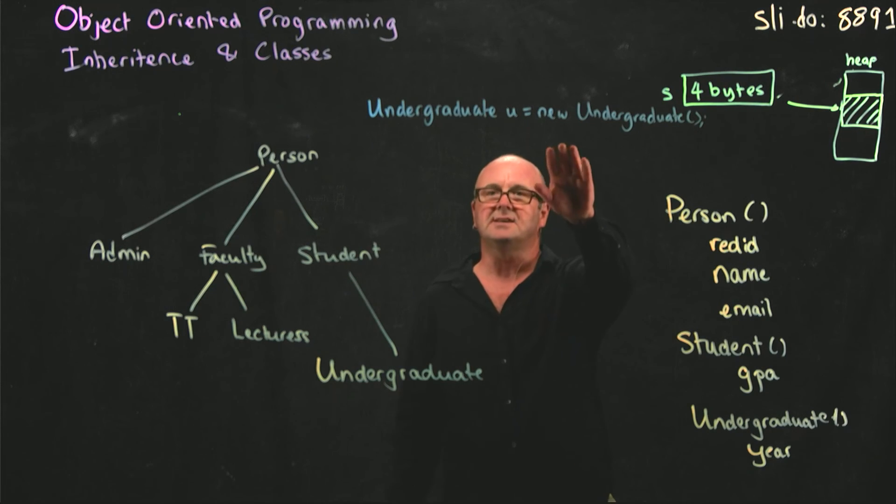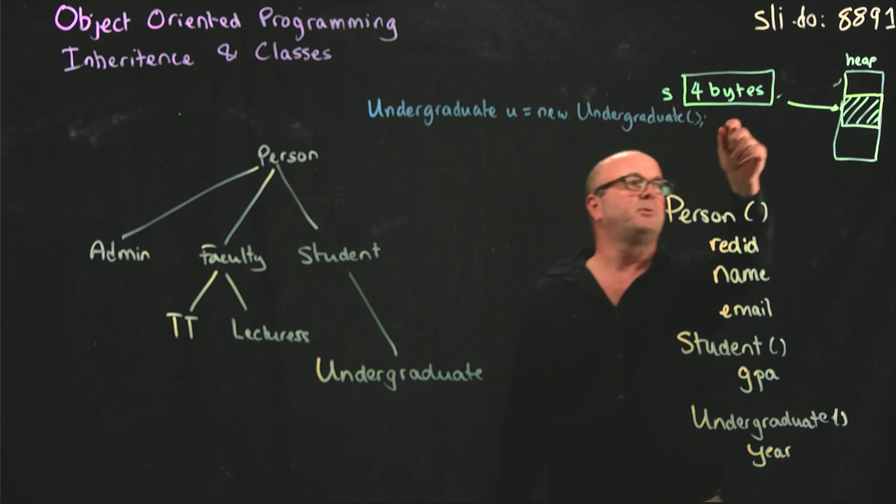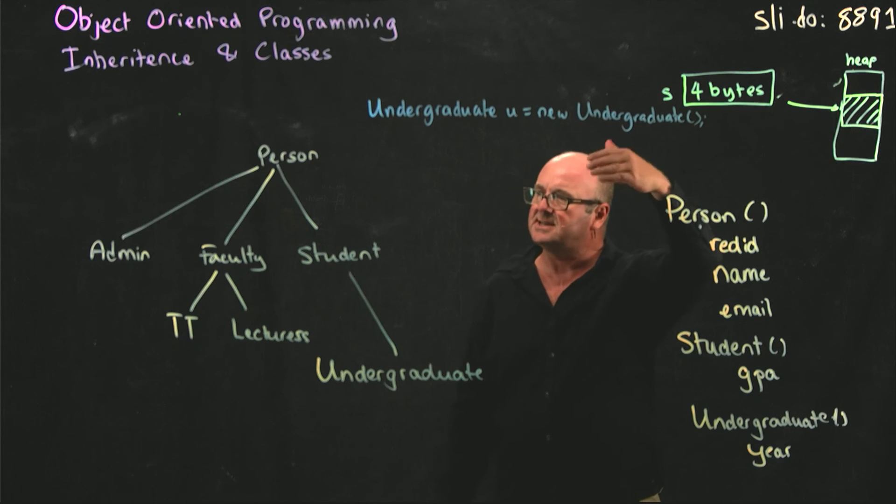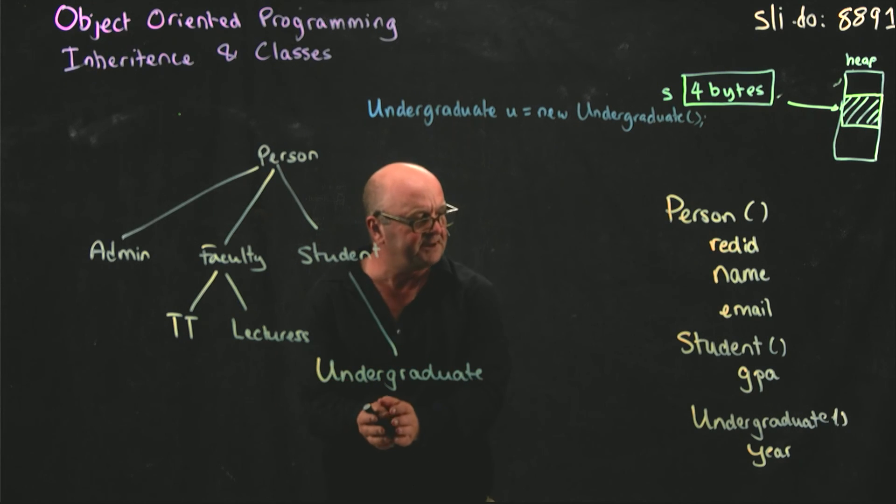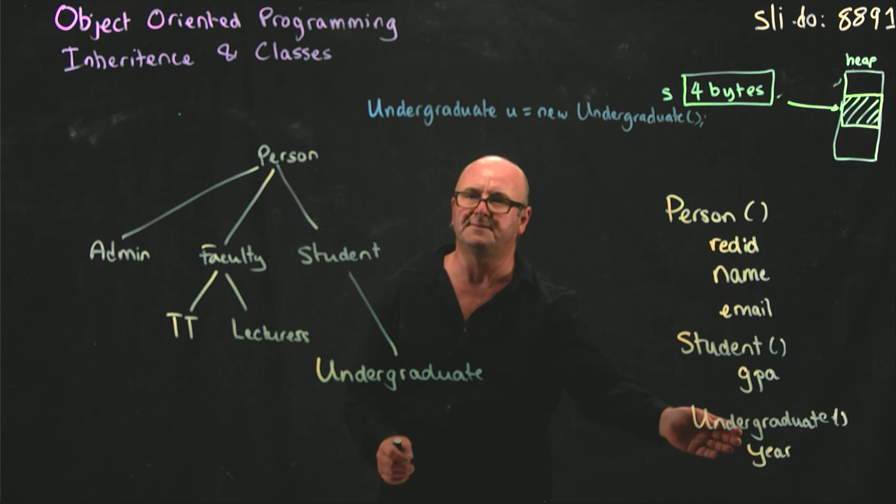This is how we would normally define some object that we want to use. And when we do this, we get four bytes allocated for u and a pointer on the heap that takes up enough space for the undergraduate. So that takes space for all of the variables in undergraduate, like year, for example.